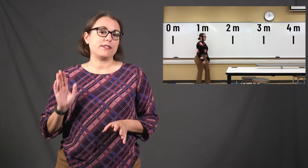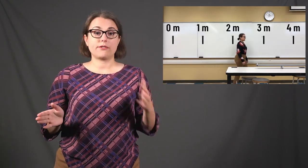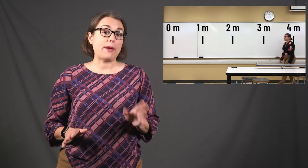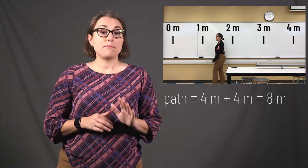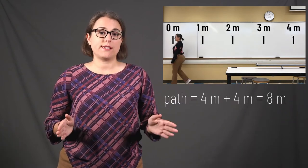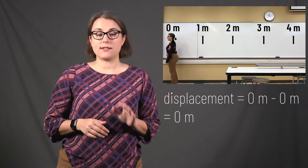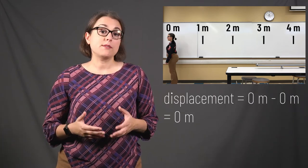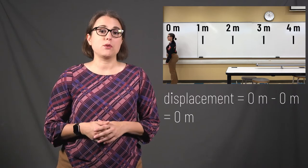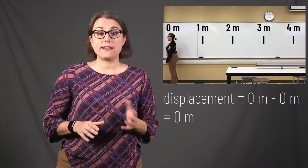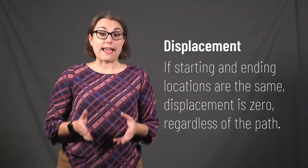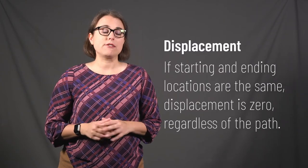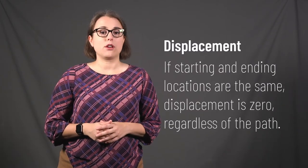Now, if I start at the 0 meter mark, walk to the 4 meter mark, and then go back to the 0 meter mark, let's calculate path and displacement again. My path is the total distance that I walk — 8 meters. My displacement is final position minus initial position. Because my final and initial positions are at the same location, my displacement is zero. Whenever the starting and ending locations are in the same spot, the displacement will be zero, regardless of how large a path there is.